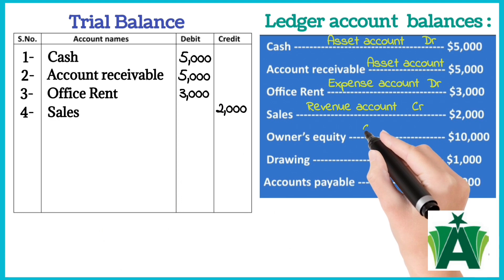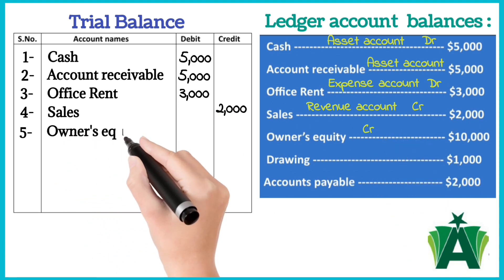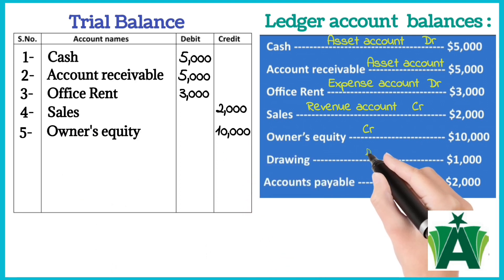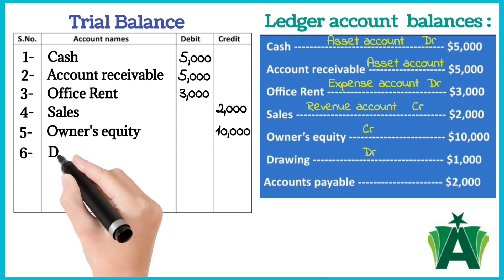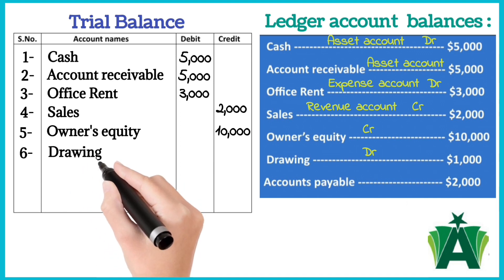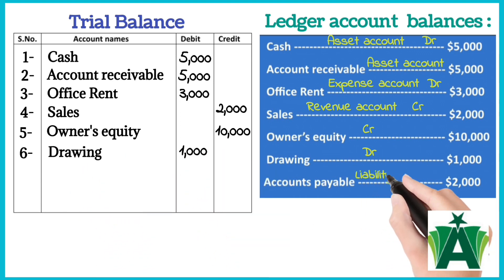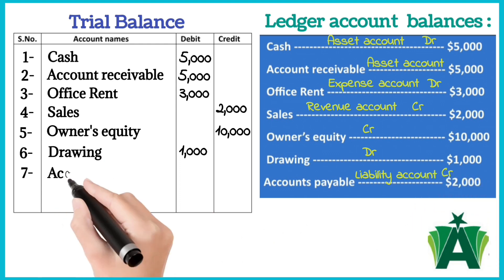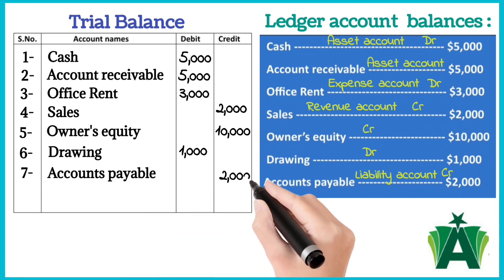The normal balance of the owner's equity is credit balance and is recorded in the credit column of a trial balance. The normal balance of a drawing account is debit balance and is recorded in the debit column of a trial balance. Accounts payable is a liability account. The normal balance of a liability account is a credit balance and is recorded in the credit column of a trial balance.